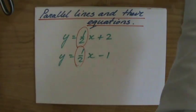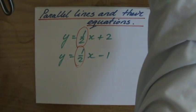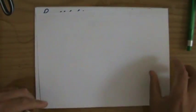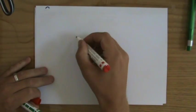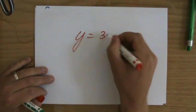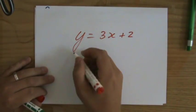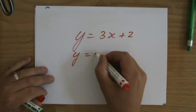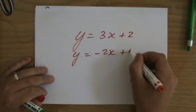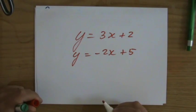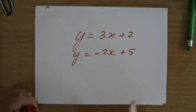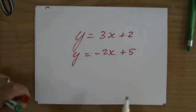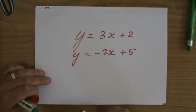So let's say my mum comes home tonight and she asks me, John, I have two equations. One of them, y equals 3x plus 2. And the other one, y equals minus 2x plus 5. And she asks me, John, are they parallel? Well, I can say, no, they're not parallel. Why is that? Because the gradients are not the same.